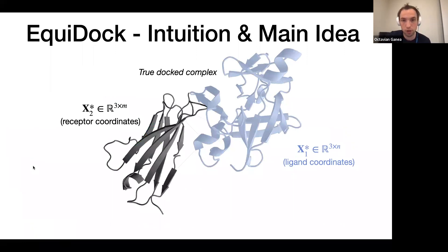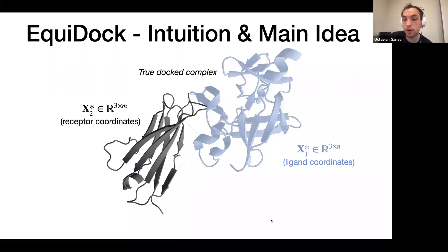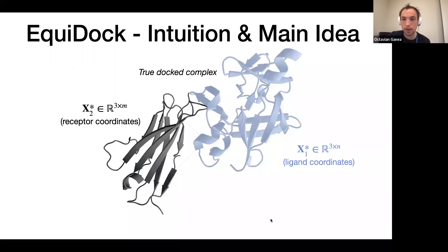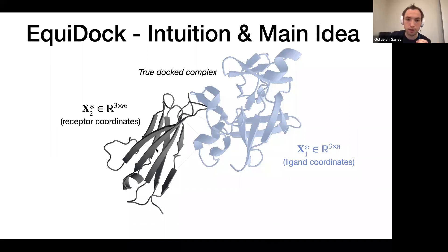Our model is called EquiDock — from Equivariant Docking. I'll explain the idea of equivariance for protein docking shortly. We start with a true docked complex, perhaps from X-ray crystallography, giving us 3D structures of the two proteins with ligand and receptor coordinates. We work with the backbone and have an implicit notion of side chains. Each node represents one residue, with coordinates being the alpha carbon of each residue.